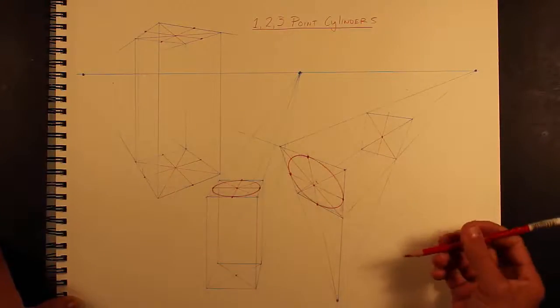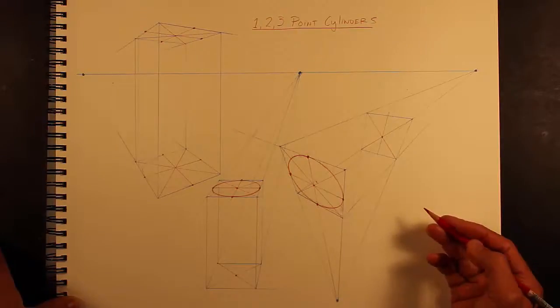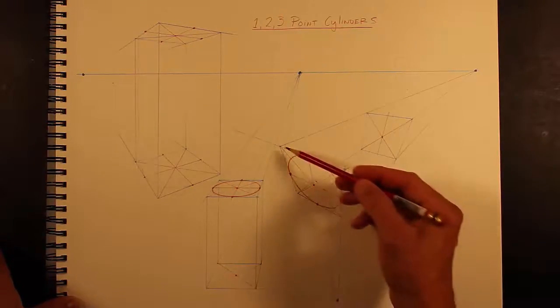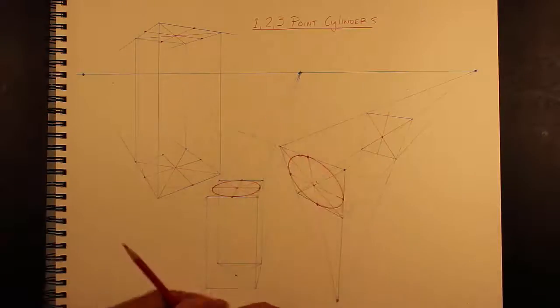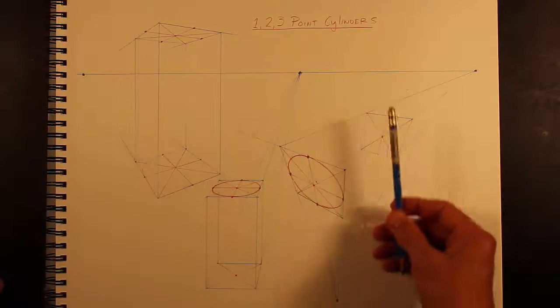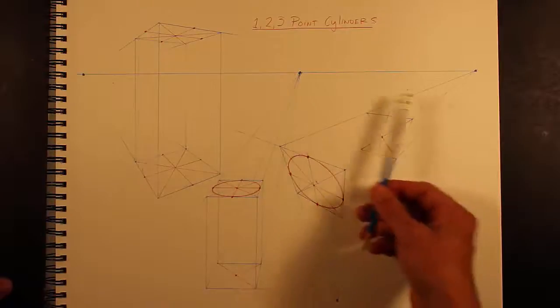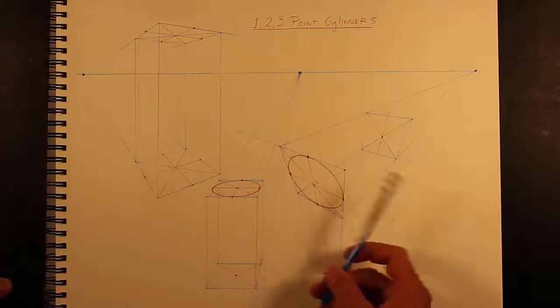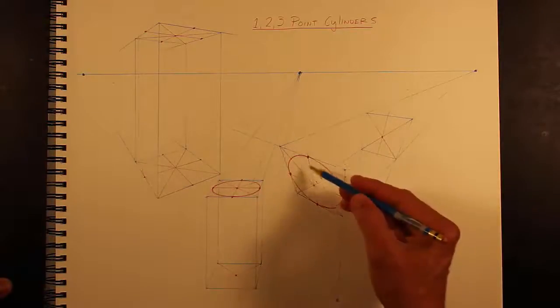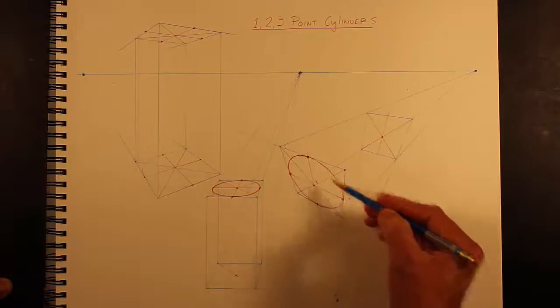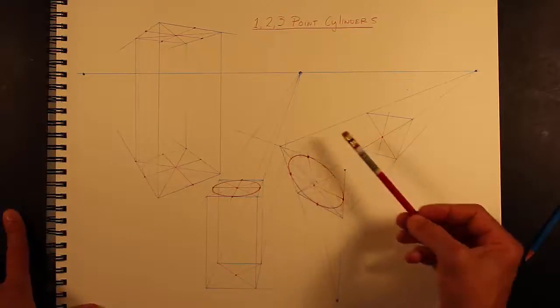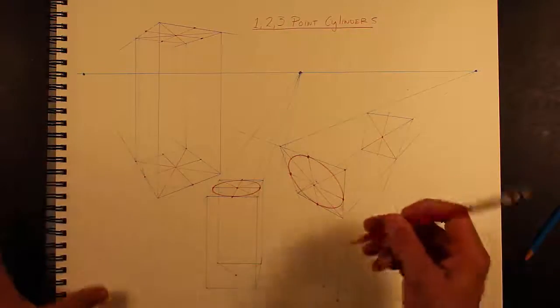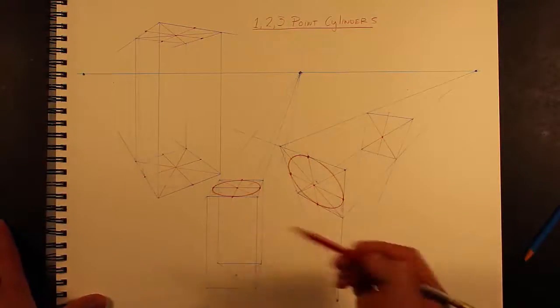The next thing to do is to find the center of the faces. And notice how light I have constructed the rectangles. The rectangles are there basically just to orientate your cylinder in space and give you reference for these points of tangency, which I'll talk about and which are really important. So make sure you do them light.